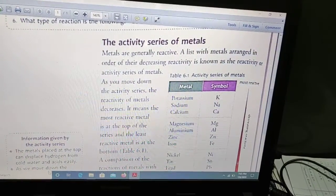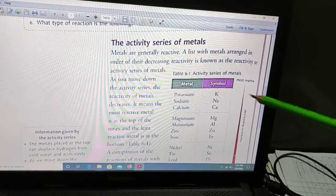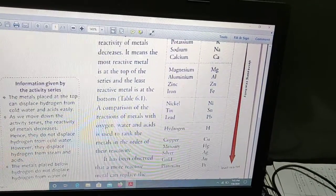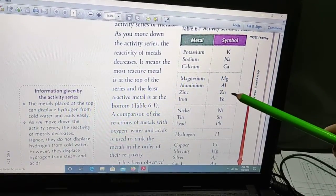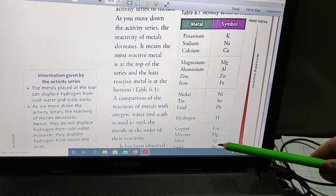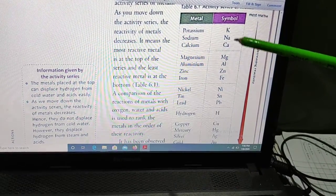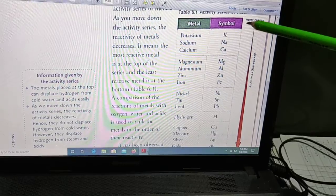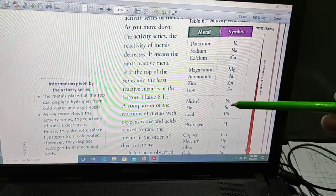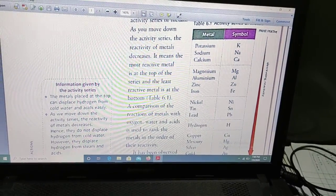What is activity series of metal? Actually it is a list of metals where the metals are arranged according to their decreasing reactivity. For example, this table, if you see, starting from potassium, sodium, calcium, magnesium, aluminum, zinc, iron, nickel, tin, lead, hydrogen, copper, mercury, silver, gold, platinum. These are the metals which are arranged according to decreasing reactivity. That means the metals at the top are most reactive and the metals at the bottom are least reactive. This is called activity series of metal. This also helps to find out which metal can displace which.